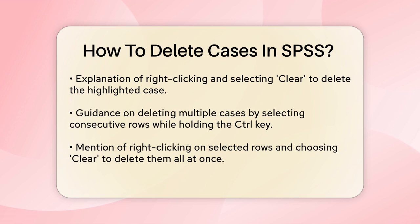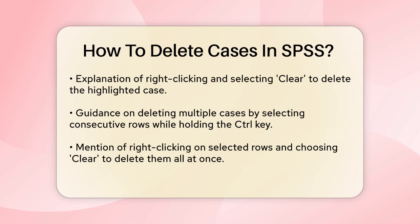If you need to delete multiple cases, you can do this by selecting multiple rows. For example, if you want to delete several consecutive rows, click on the first row, hold down the control key, and then click on the other rows you want to delete. Right-click on any of the selected rows and choose Clear to delete them all.